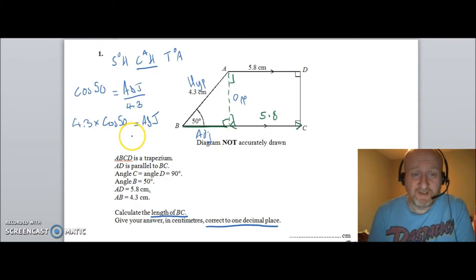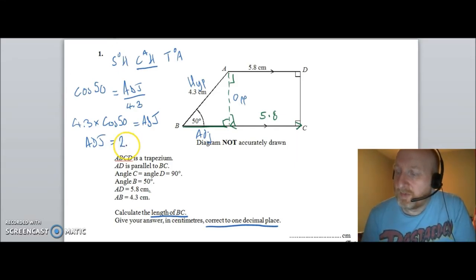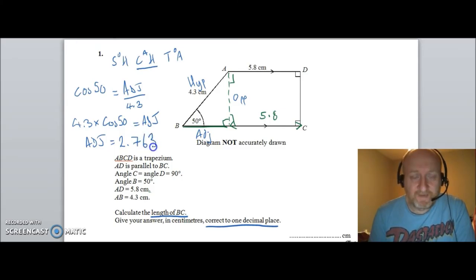Now if you put that into your calculator you'll get the answer that the adjacent is length 2. What should I work it out as? I worked it out as 2.76. Where am I? 2.7639.